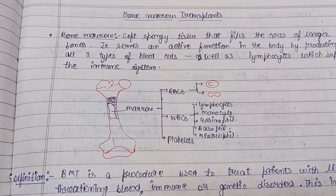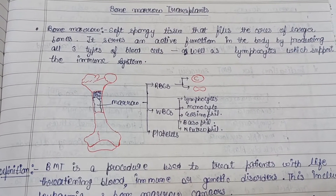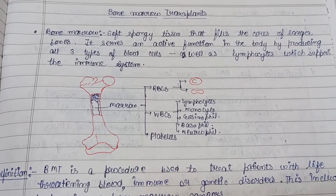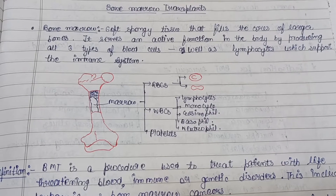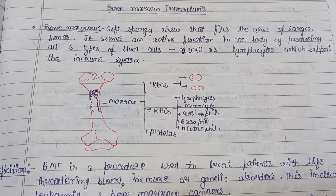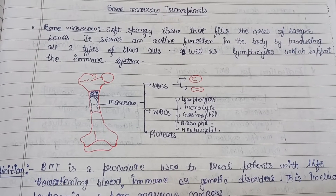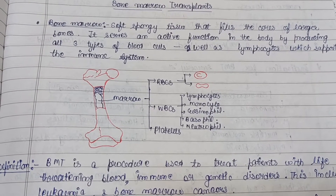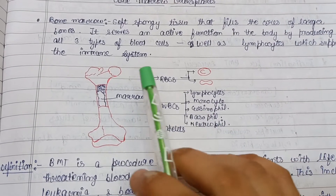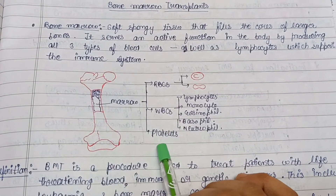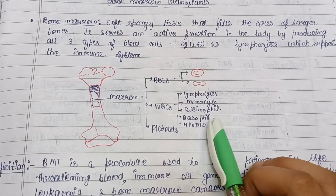The first question that arises is: what is bone marrow? It is a soft, spongy tissue that fills the cores of larger bones. It serves an active function in the body by producing all three types of blood cells as well as lymphocytes, which support the immune system. The marrow produces RBCs, WBCs, and platelets. In WBCs, lymphocytes, monocytes, eosinophils, basophils, and neutrophils are also produced.